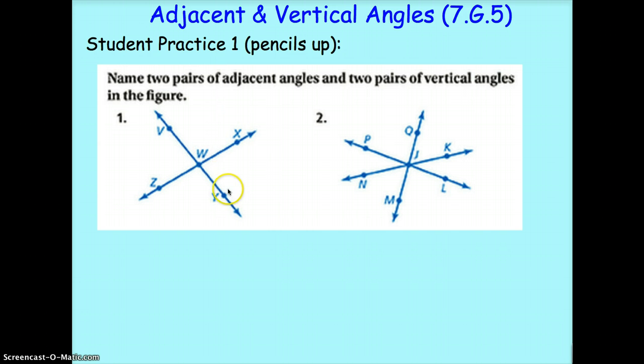And then our vertical angles, of course, would be two that are across from each other. For example, V, W, Z and X, W, Y. Or V, W, X and Z, W, Y. Either one of those would have worked.